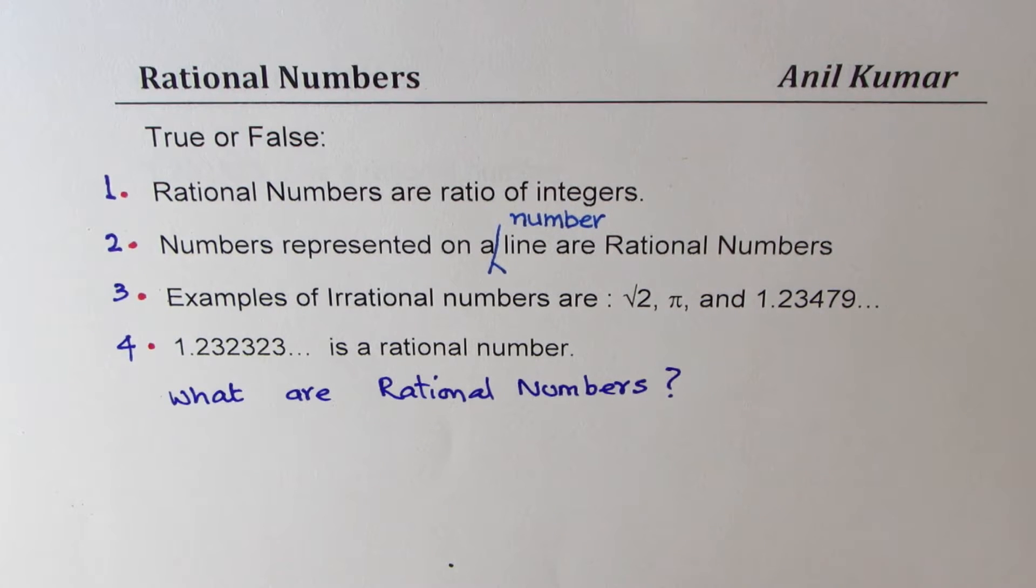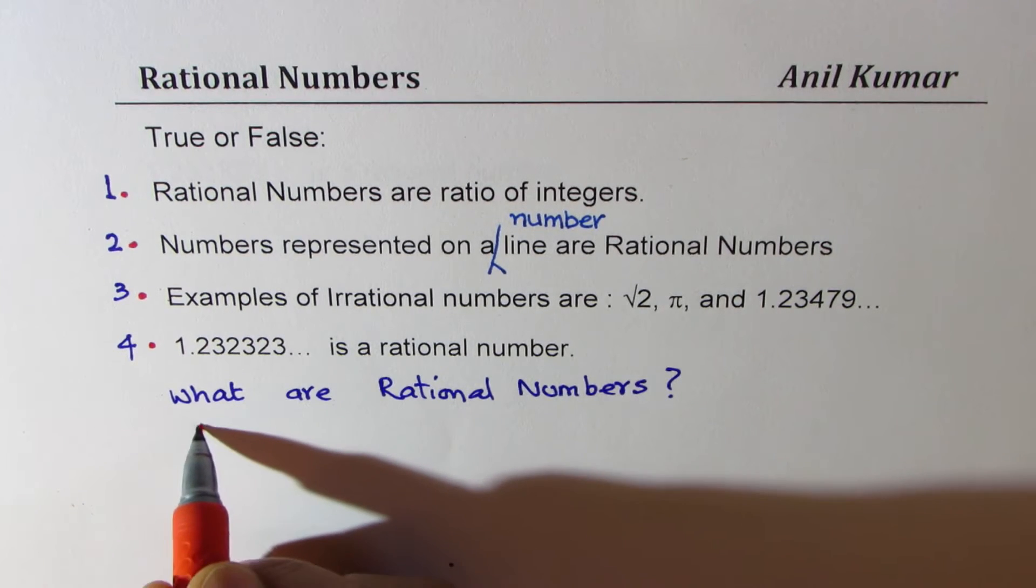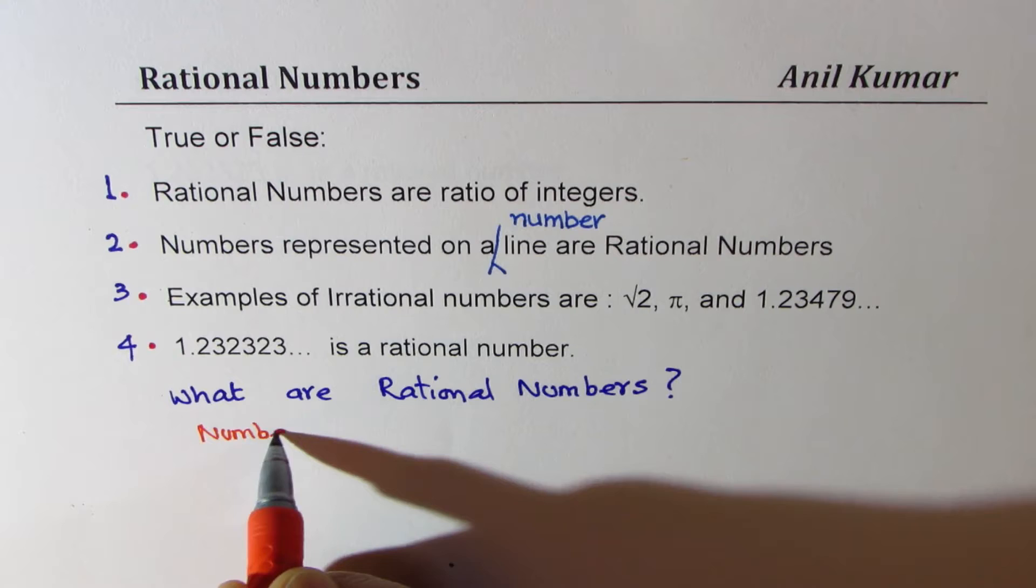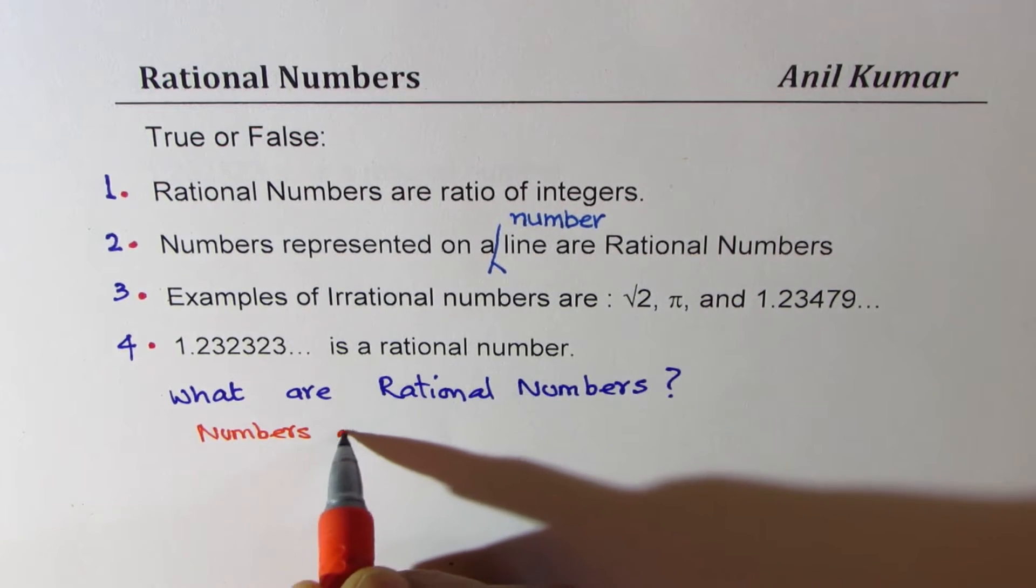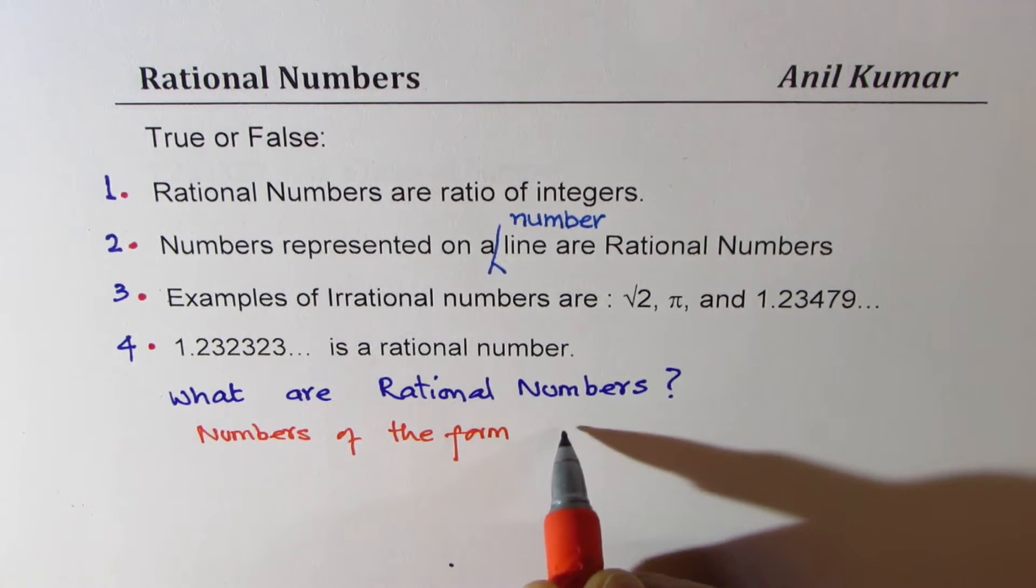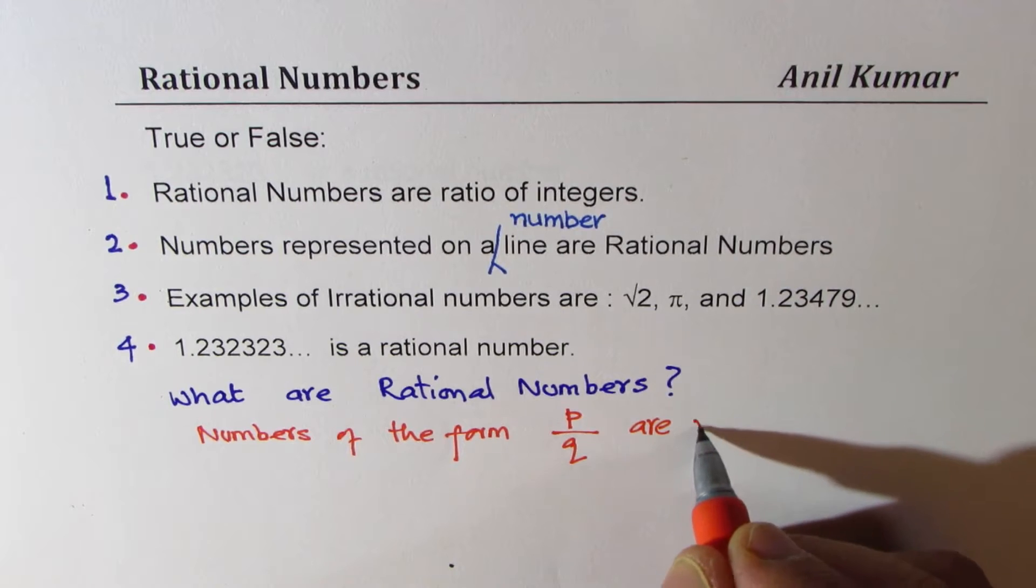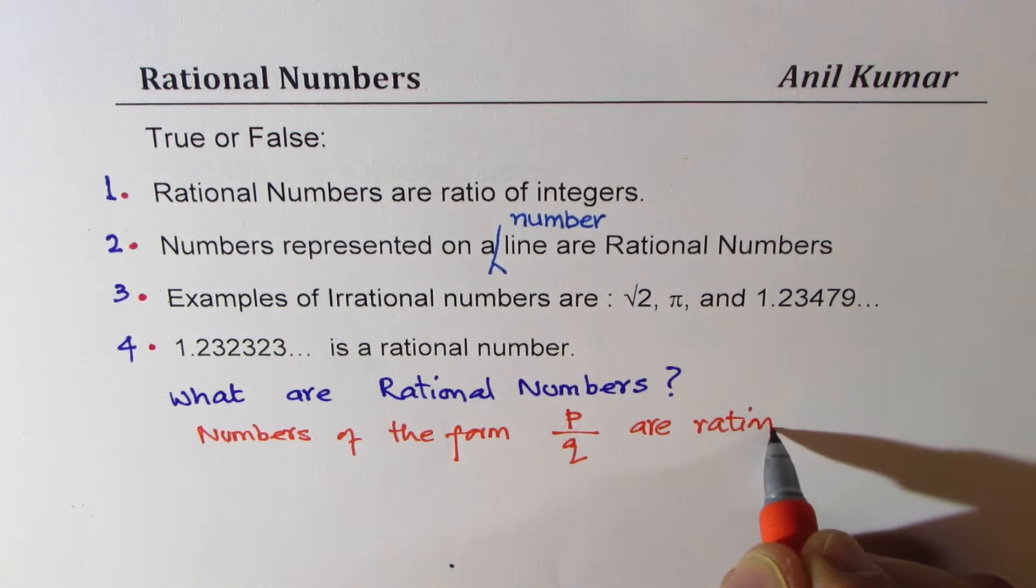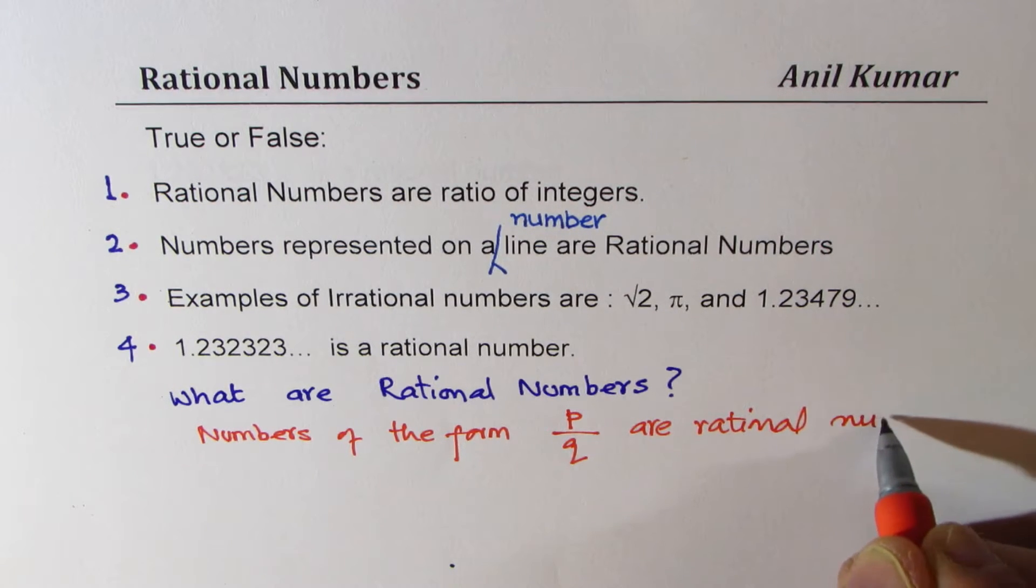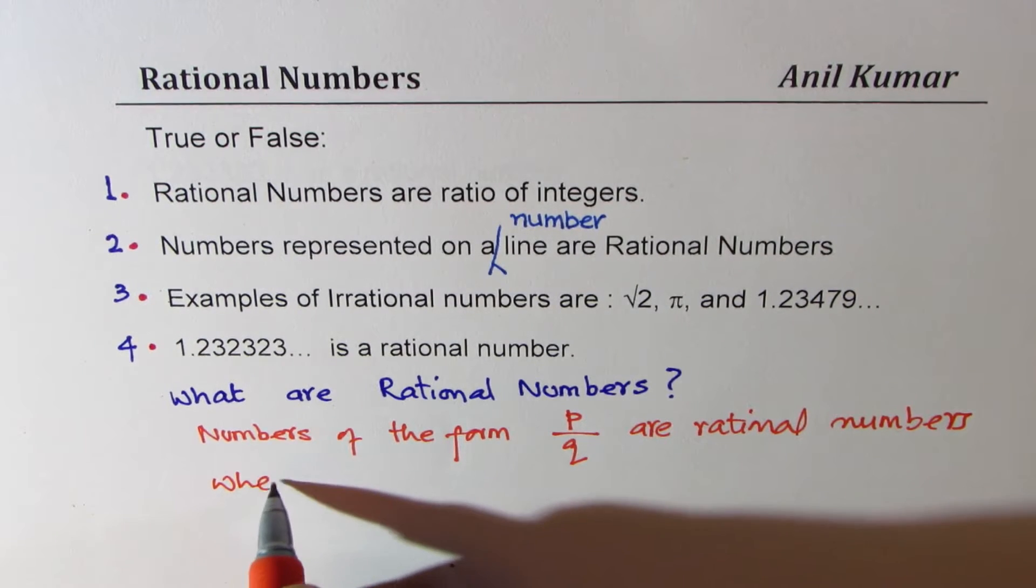We define numbers of the form P over Q are rational numbers, where there is a condition - this is very important.